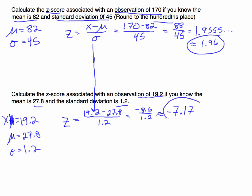This is the z-score associated with 19.2. It is 7.17 standard deviations to the left of the mean. That negative sign is telling us it's to the left.